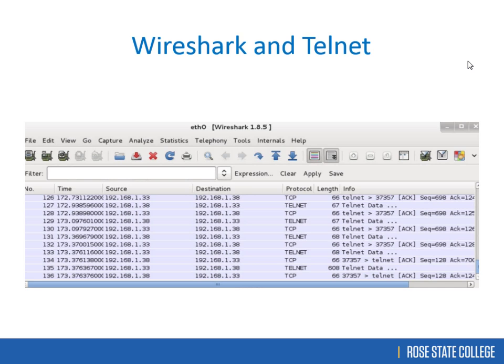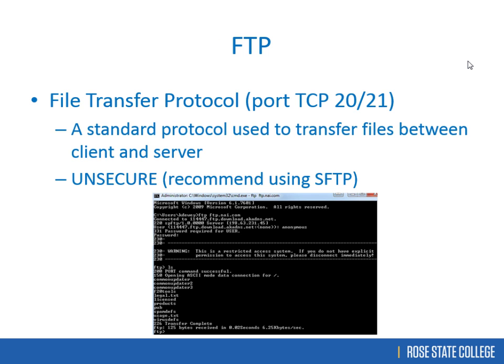FTP — File Transfer Protocol — works on two different ports: 20 and 21. These port numbers can be changed. For example, RDP (Remote Desktop Protocol) uses port 3389. When Rose State blocks 3389, you can reassign RDP to a different port. I scanned Rose State's network and found ports 20, 21, and 505 open, so I reassigned RDP to port 20 and connected all day.